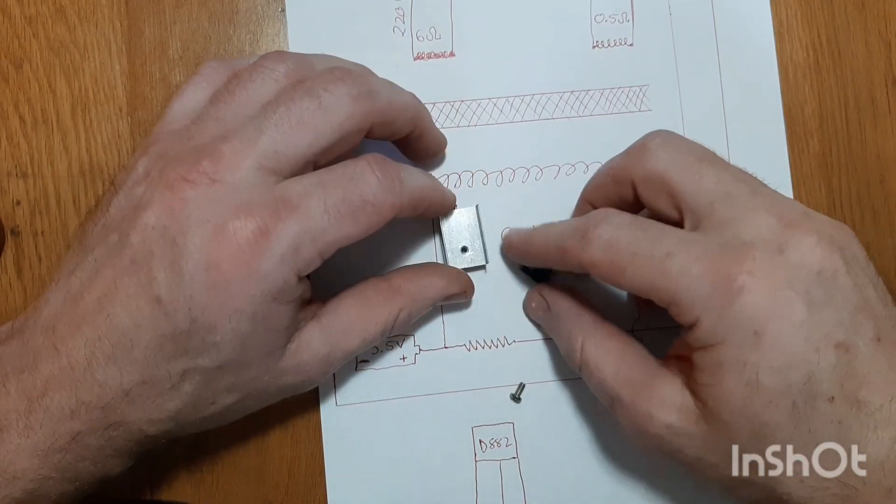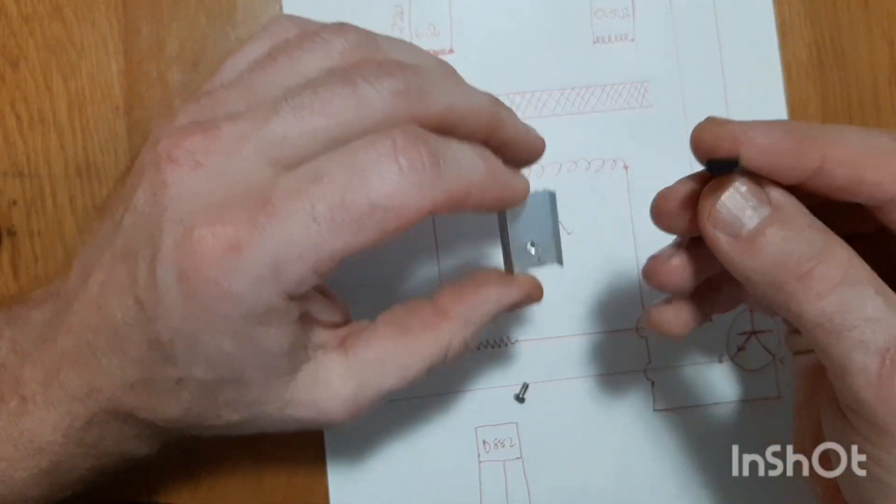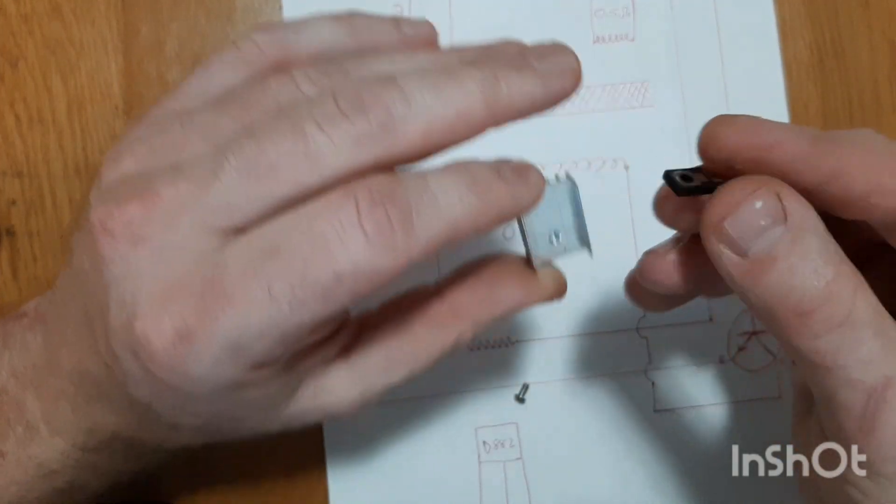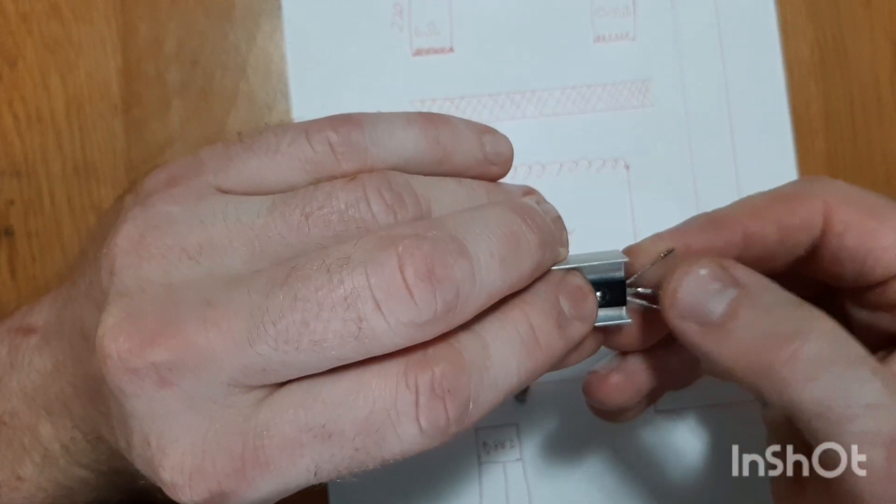For starters, we are going to screw our transistor to our heat sink. Make sure that the metal side is onto the heat sink like that. Let's go ahead and screw that on.